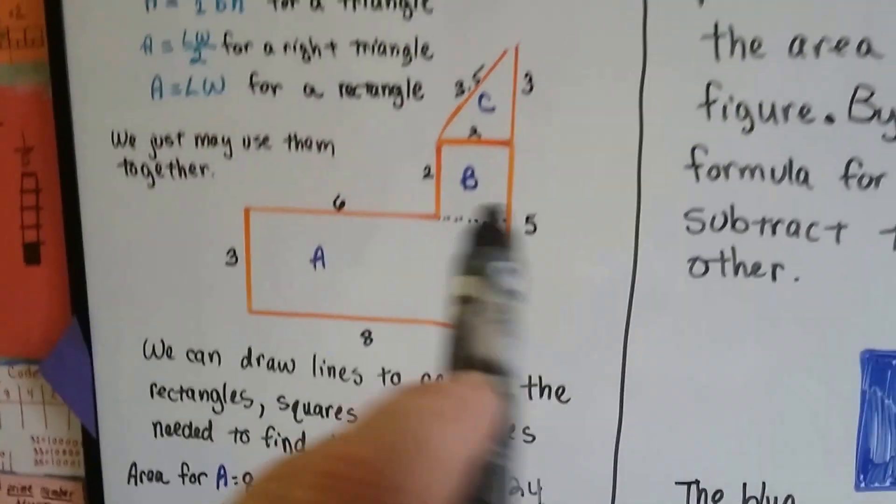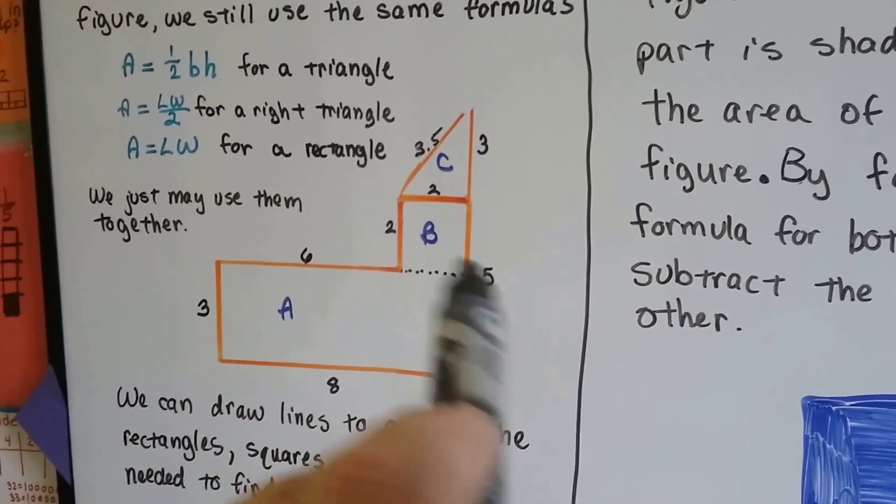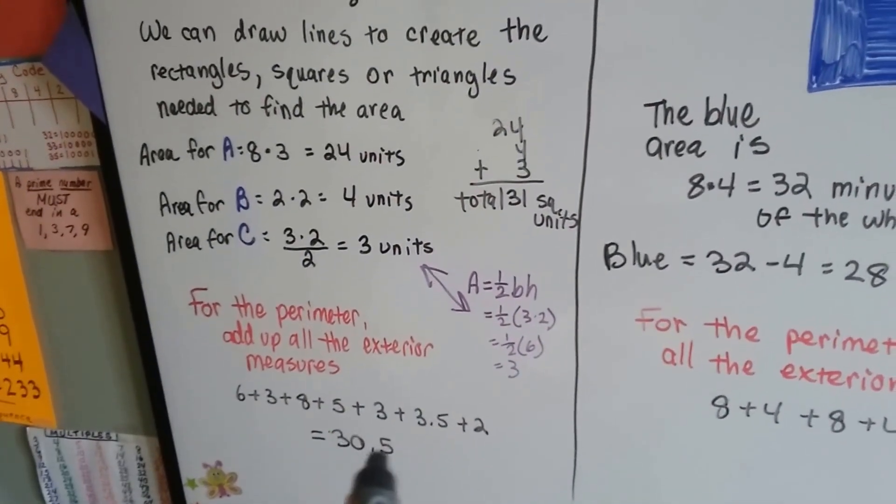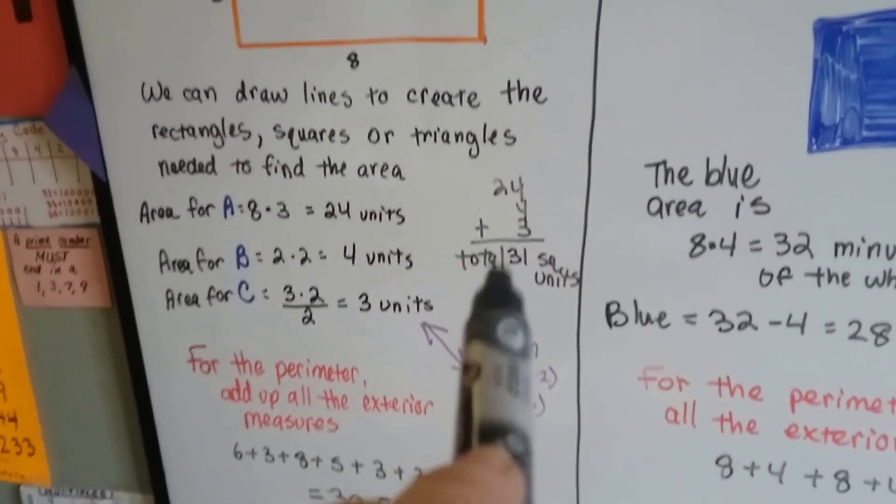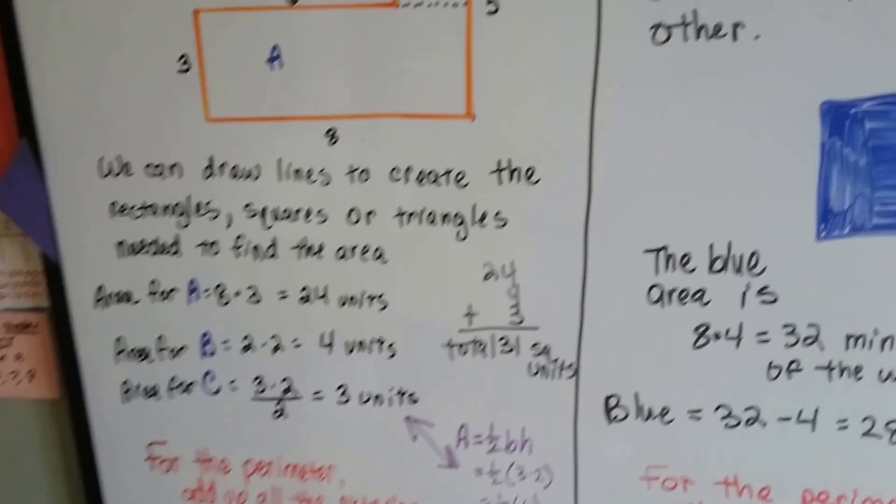So whatever units we could use, inches, feet, miles, centimeters, millimeters, I didn't specify. That's what it would be. It would be 30.5. Now for the area, it would be square units. Remember that.